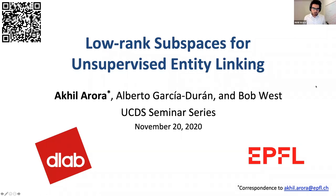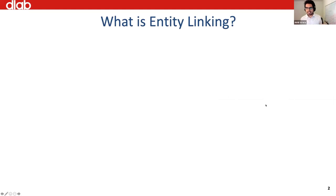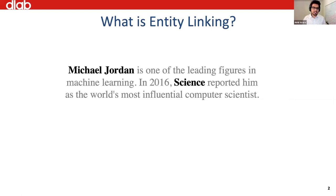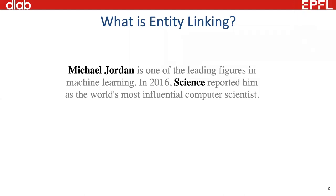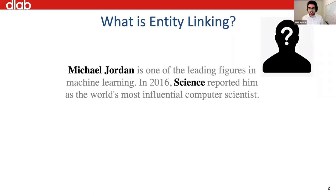Let's first have a bird's eye view of what entity linking is. The bookish definition: it's a task of grounding mentions — spans of text — to a referent knowledge base or knowledge graph. In the example we see right now, the spans of text are 'Michael Jordan' and 'science', which we want to link, and the goal is to properly disambiguate these mentions to the right entities.